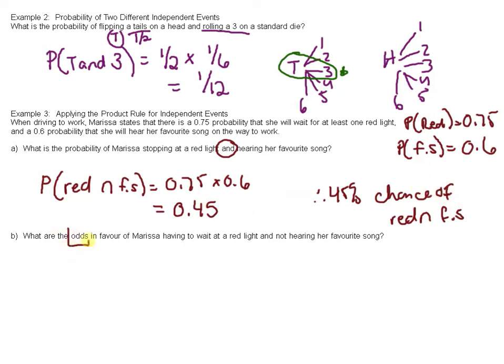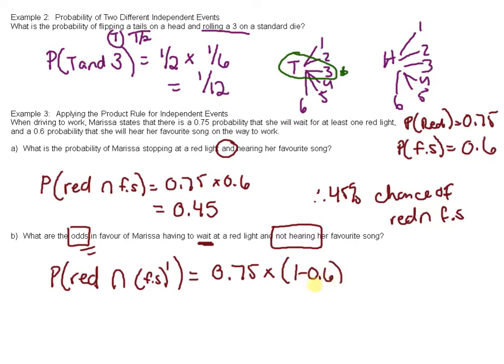And what are the odds in favor of Marissa having to wait at a red light and not hearing her favorite song? So now we're doing red light and favorite song complement, because not her favorite song. So red light is 0.75 times, and then to get the complement of her favorite song, we would do one minus 0.6, right? We'd get the other probability. So it's just 0.4. Now, 0.75 times 0.4.